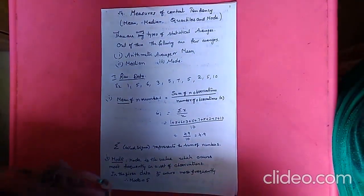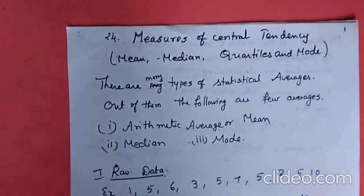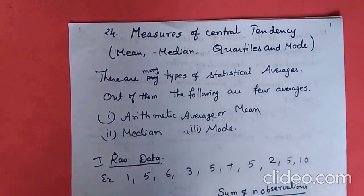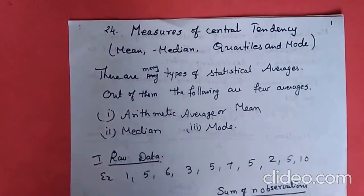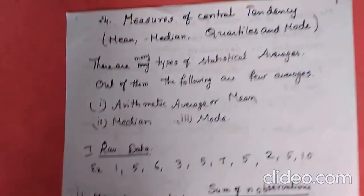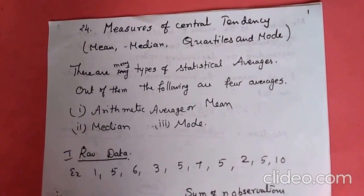Hello students. Now the next chapter, chapter number 24, measures of central tendency. We are going to calculate mean, median, quartiles and mode.